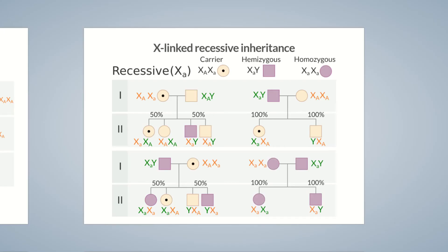If both parents exhibit the phenotype of the X-linked recessive gene, then all their children will be affected.